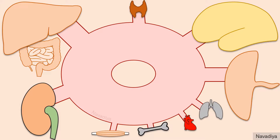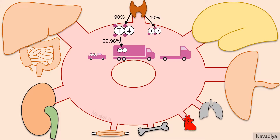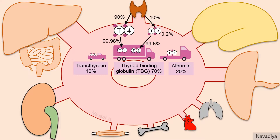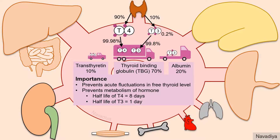Quick revision: in thyroid release, 90% is T4 and 10% is T3, RT3 is negligible. T4 is 99.98% plasma protein bound and T3 is 99.8% protein bound. Thyroid binding globulin accounts for 70% of binding, albumin for 20%, and transthyretin for 10%. Protein-bound hormones serve as a reserve and prevent acute fluctuations in free thyroid levels, prevent metabolism, and prolong half-life. Half-life of T4 is about 8 days and T3 is about 1 day. T3 is more potent than T4 and responsible for most thyroid actions; T4 serves as pro-hormone for T3.